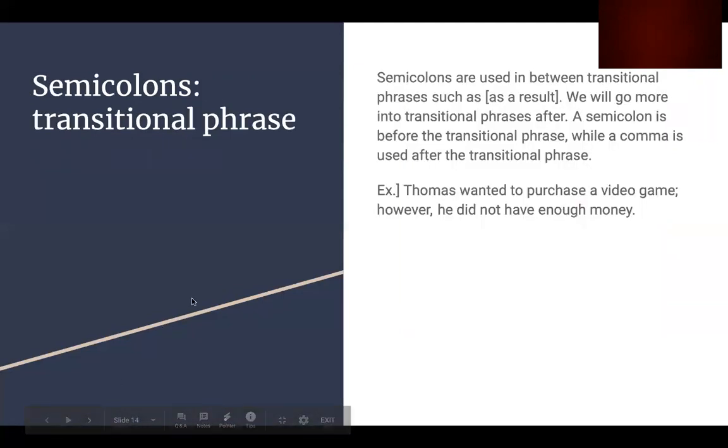Now, we will talk about a transitional phrase for semicolons. Semicolons are used in between transitional phrases such as, for example, as a result. Now, we will go more into transitional phrases after. But first, let's talk about semicolons and transitional phrases. A semicolon is used right before the transitional phrase, while the comma is used after the transitional phrase. Thomas wanted to buy a video game; however, he did not have enough money. It is important to use the semicolon and the comma. Remember, the semicolon comes before the transitional phrase. The comma comes after the transitional phrase.